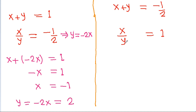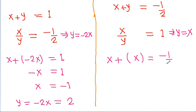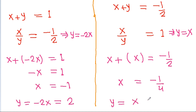In Case 2, we get y is equal to x and x plus y is equal to minus 1 by 2. So x plus x equals minus 1 by 2, giving 2x equals minus 1 by 2, so x is equal to minus 1 by 4. And since y is equal to x, y is equal to minus 1 by 4.